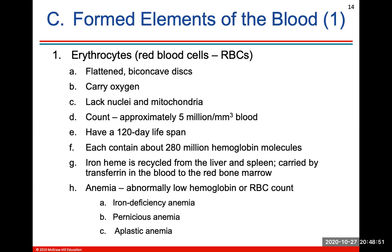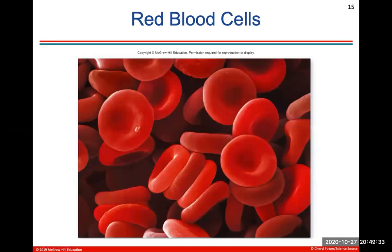Erythrocytes are red blood cells — part of the formed elements. They're flattened biconcave discs whose only function is to carry oxygen and hemoglobin. They do not have nuclei, have lots of mitochondria, and have a lifespan of about 120 days. Each contains about 280 million hemoglobin molecules. The iron heme is recycled from your liver and spleen. Anemia is abnormally low hemoglobin or red blood cell count, and there are different types.